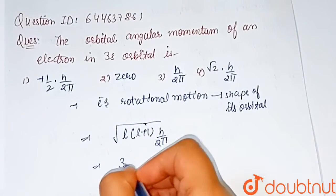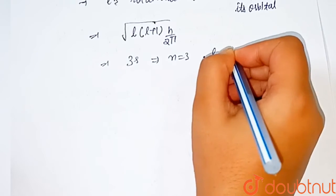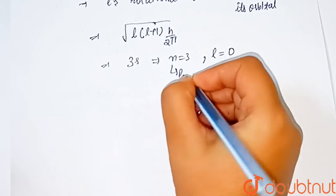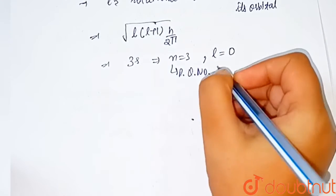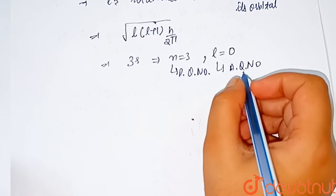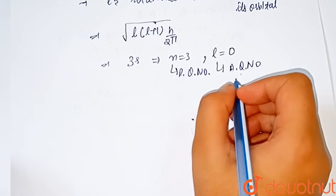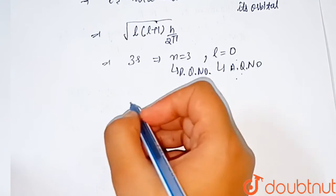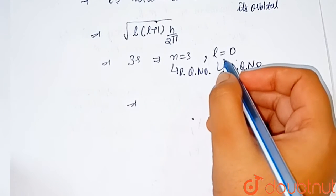Here we are given 3s orbital where l = 0. Where n is the principal quantum number, l is the azimuthal quantum number, and the azimuthal quantum number for s orbital is 0.